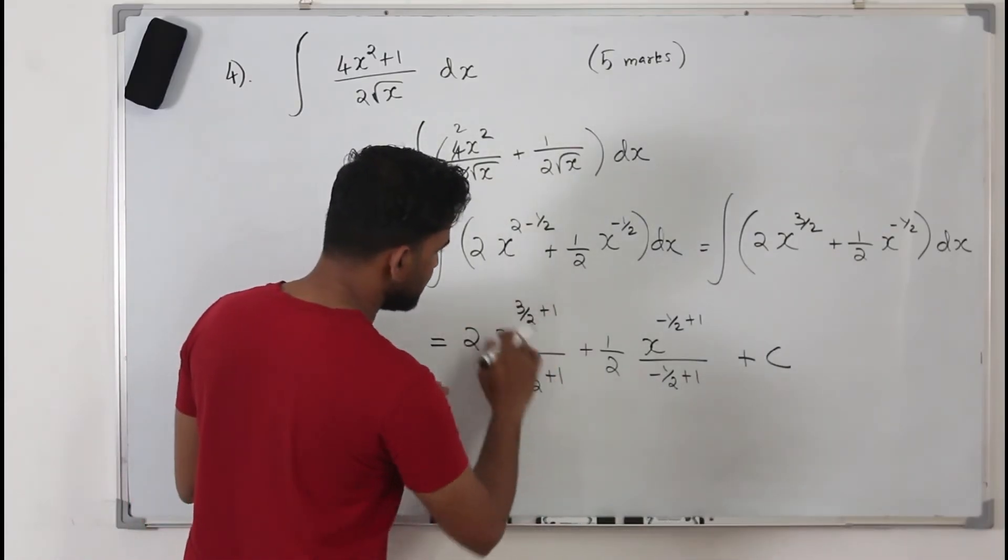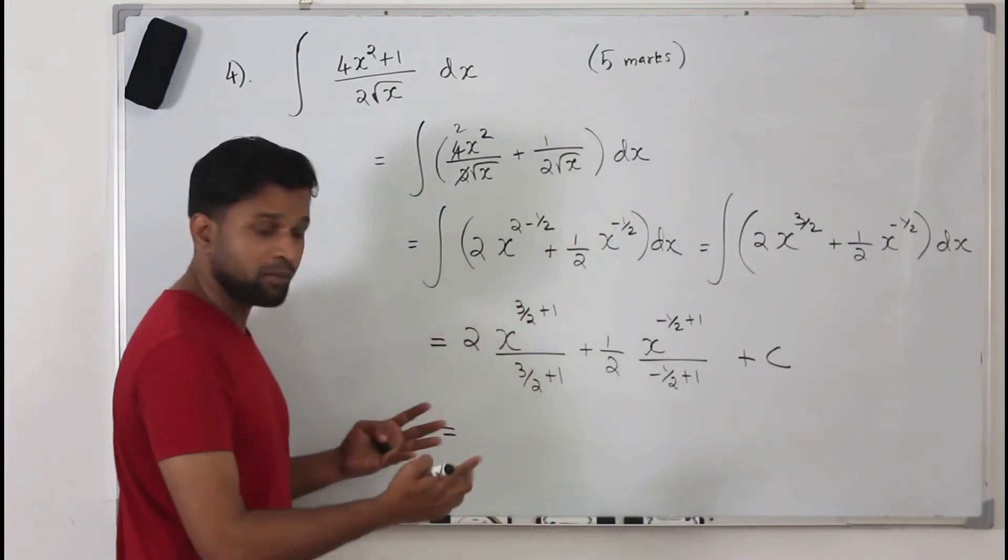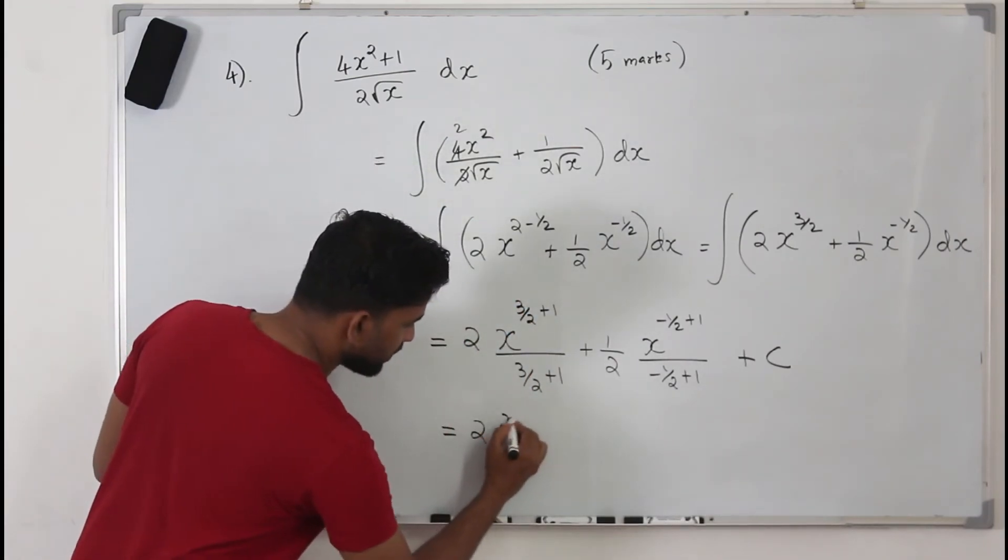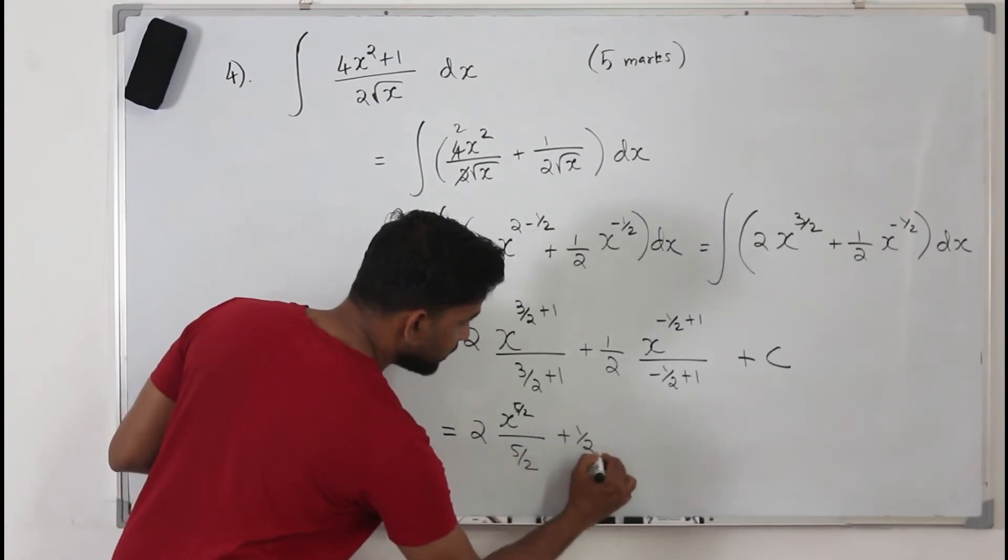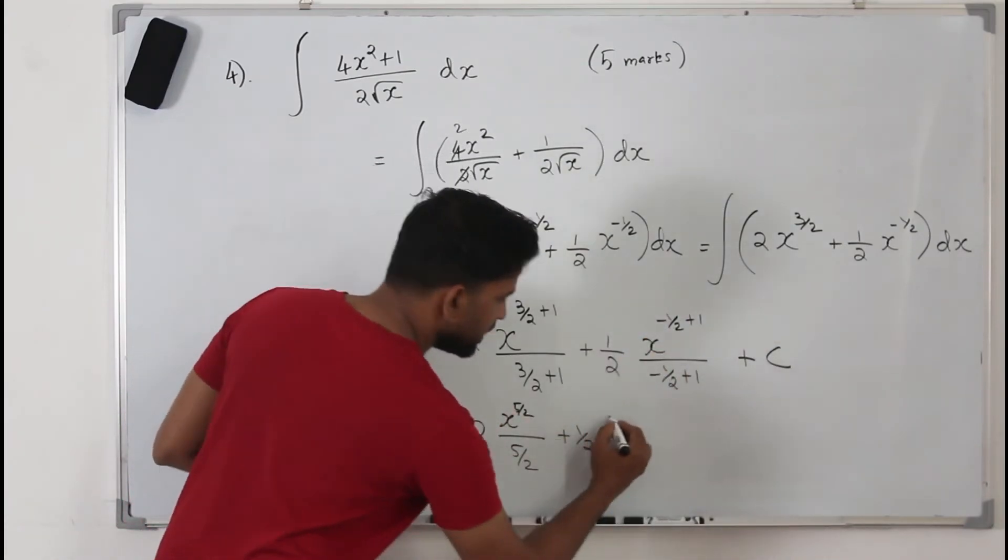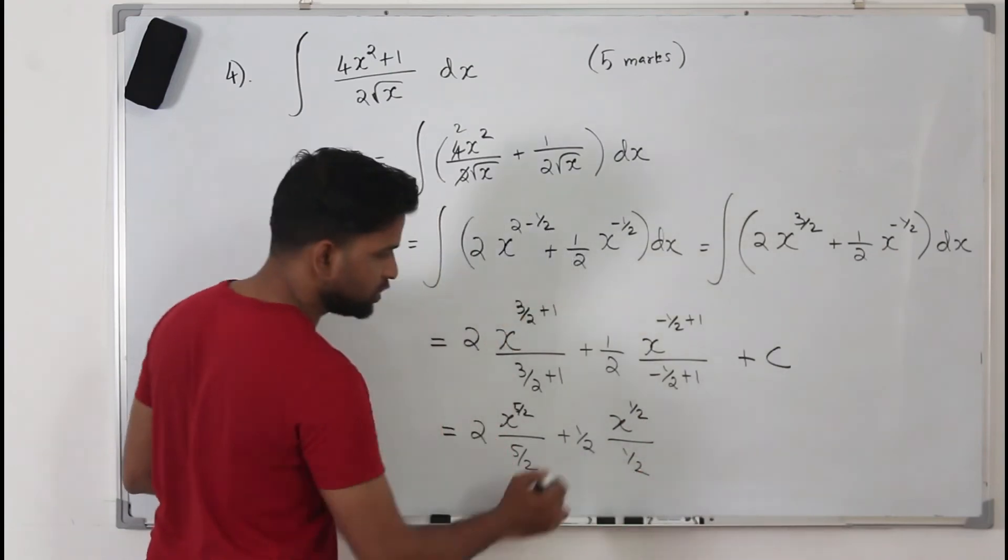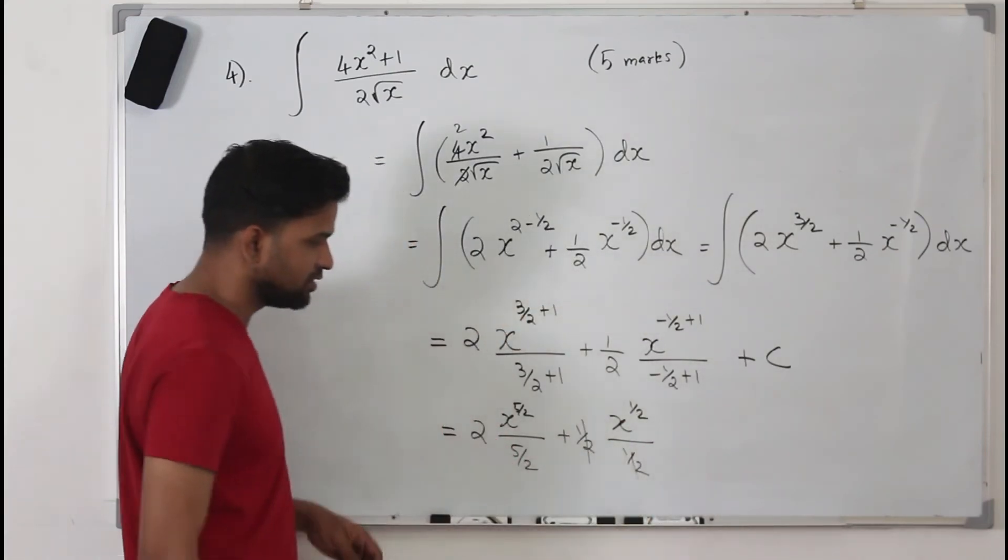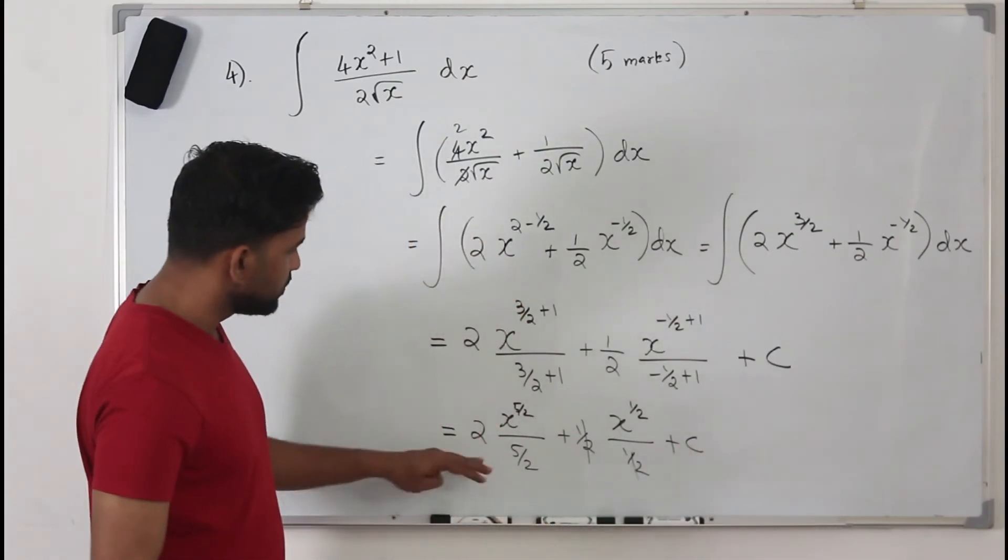How do you want to simplify this? When you simplify this, it becomes 5 upon 2. So 2 x to the power 5 upon 2 divided by 5 upon 2 plus half. Minus half plus 1 is half. So x to the power half by half. This 0.5 and 0.5 can be cancelled. And don't forget this, plus c, that's very important. So that's your result.